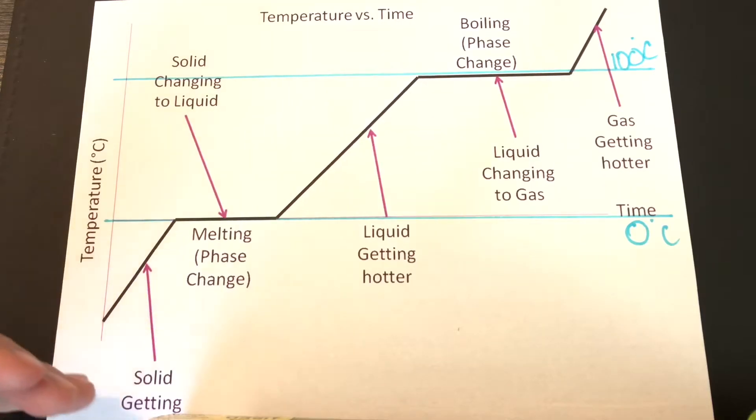Anything below zero degrees is going to be considered a negative number. So if you have a question on your exam or homework that starts you off at negative four degrees, this is where you will be starting. All right, so as the solid gets hotter, we reach our first melting phase.